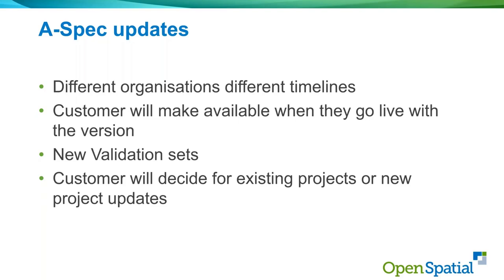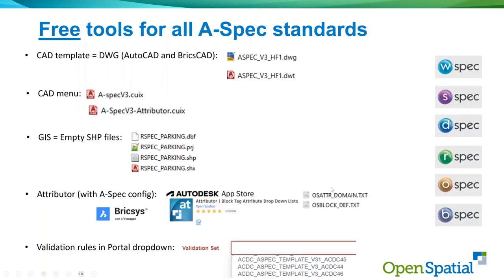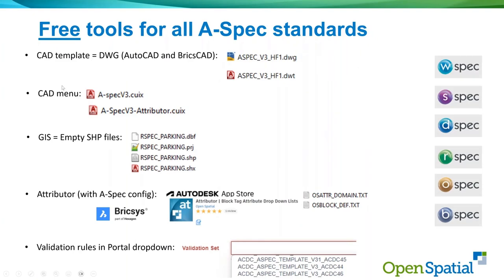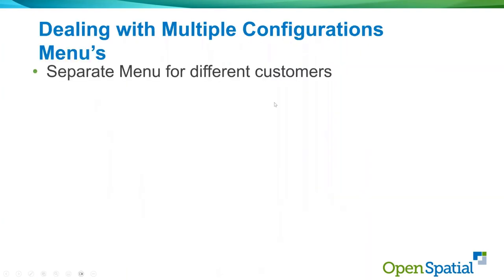Part of that is the communication process — from what date will we accept the new standard. So we've had a quick look at the tools for the standard. Now we're going to dig into the detail: how to deal with multiple configurations. Looking at the CAD templates and menus, we're going to start by looking at the menus — you may have different menus for different organizations.